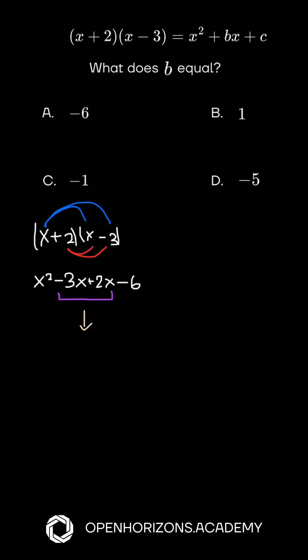So we combine the like terms as you can see right here. Now we're left with x squared minus x due to negative 3 plus 2, then minus 6.